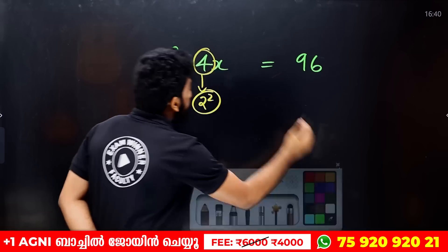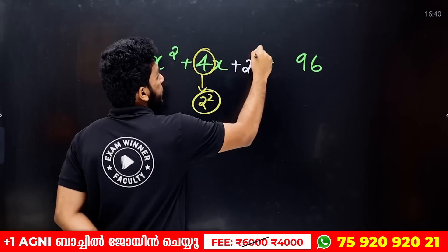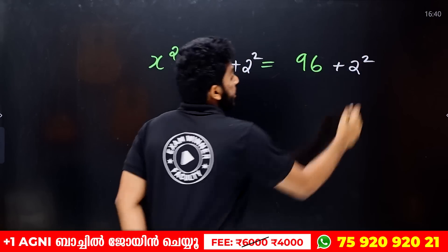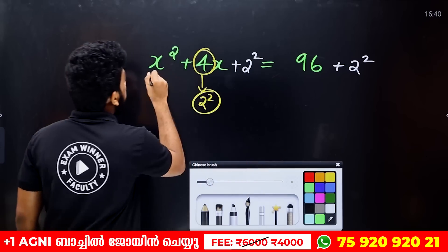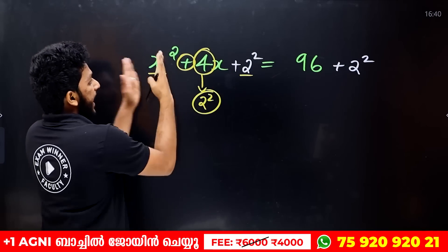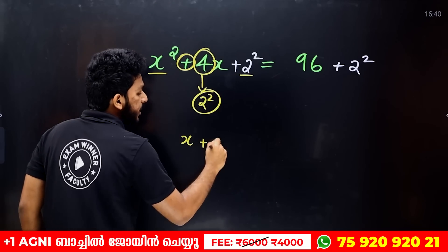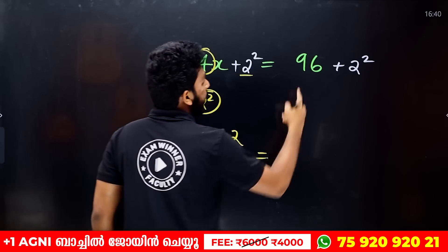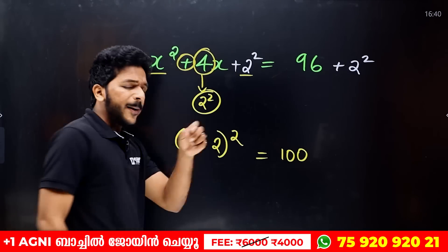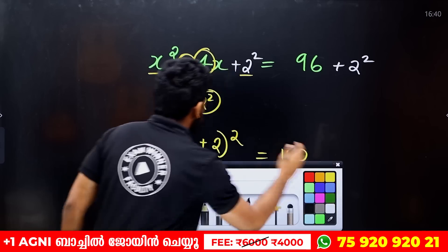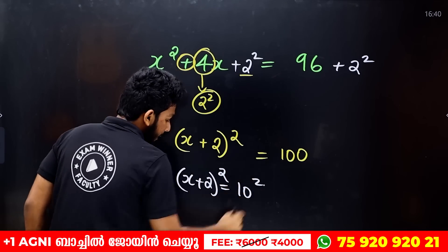So if you want to complete the square, you add 2 squared — that is the same. If you want to add the same value to both the left and right sides, you will add the same equation. Now you will have x plus 2, the whole square. On the left side, 96 plus 4 is the whole square. If you want to add a square on both sides, you will add a square here: (x plus 2) whole squared is equal to 100.